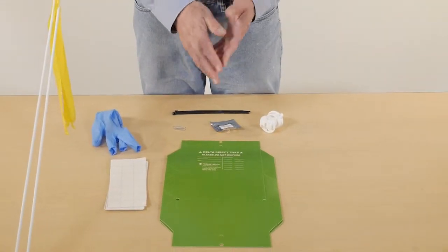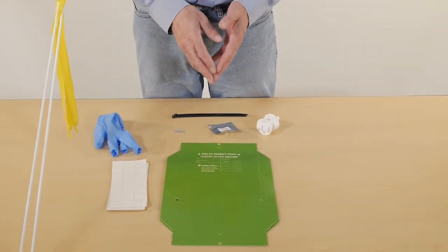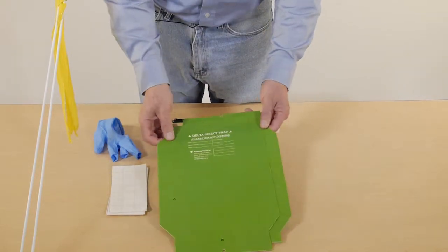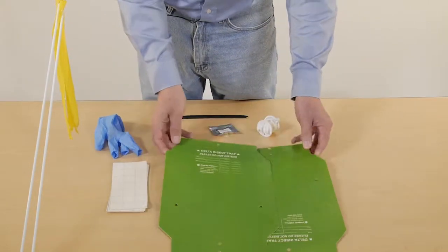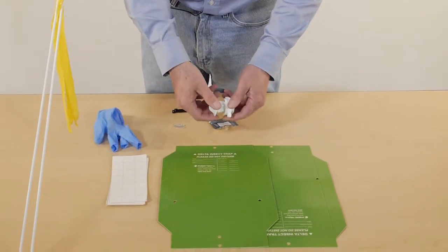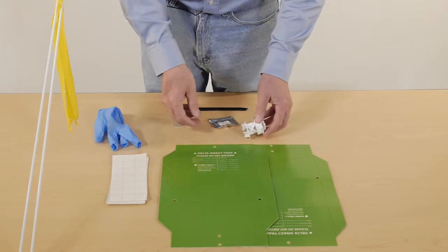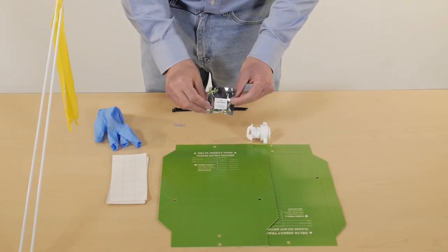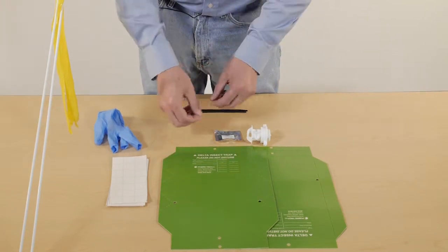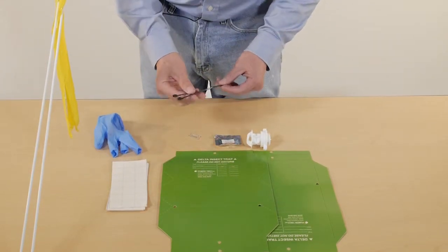When you get your package to do the midge monitoring, for each field you'll get two midge traps, delta traps, you'll get two of these insulators to hang the trap off of, you'll get two wheat midge lures, you'll get some paper clips and a couple zip ties.